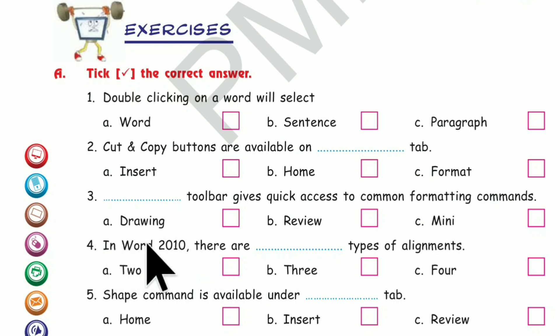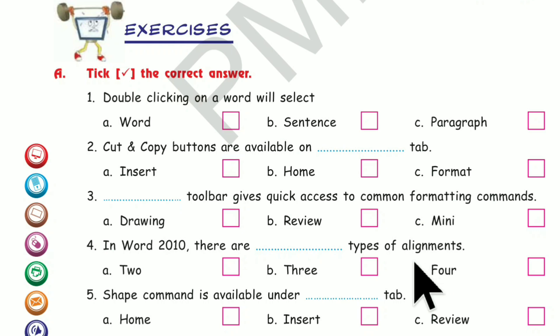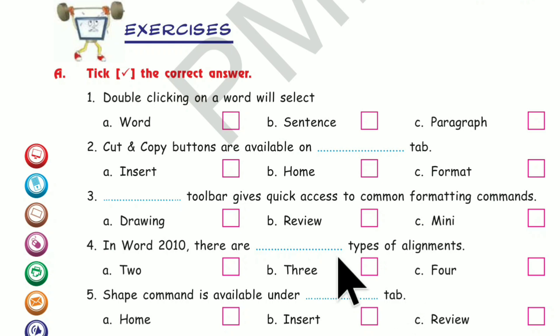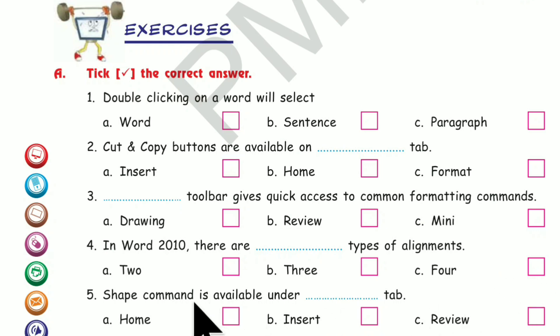Number 4. In Word 2010, there are how many types of alignments? The answer is four types of alignments. Tick here.